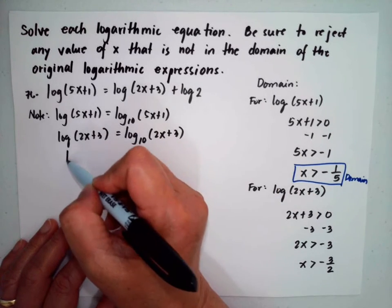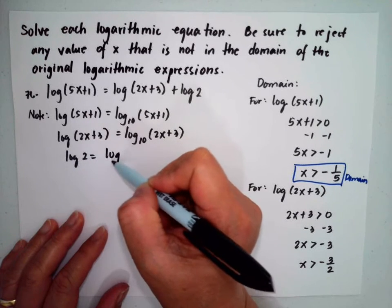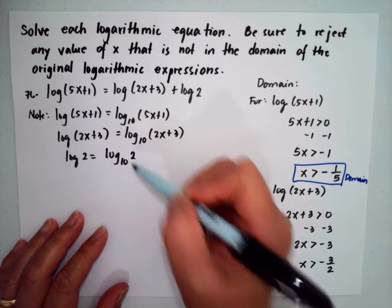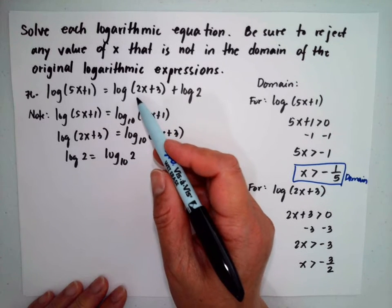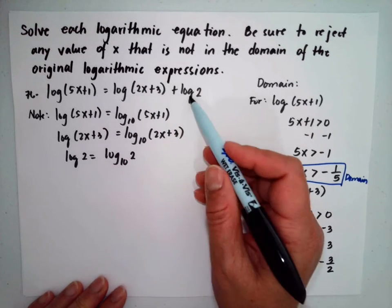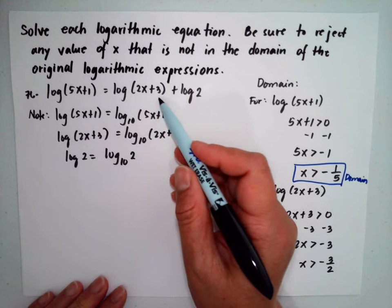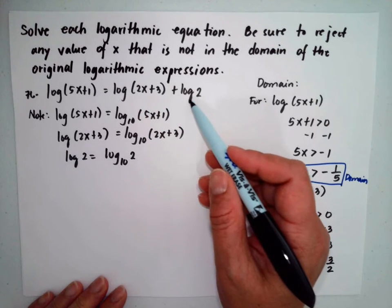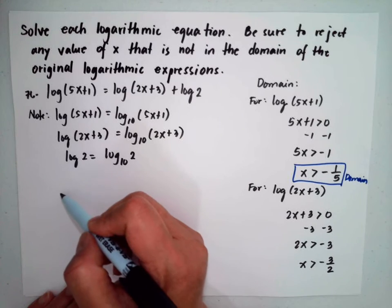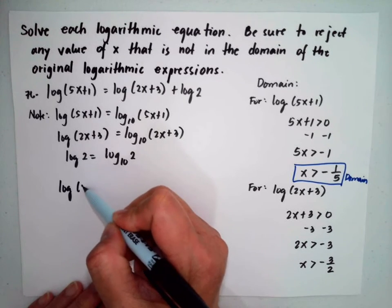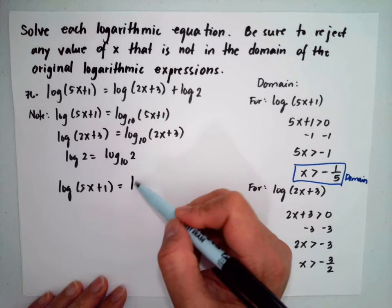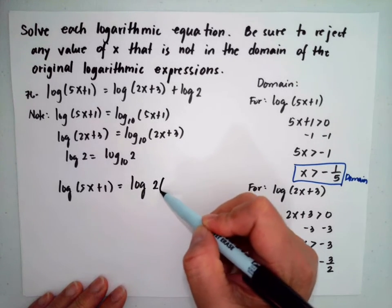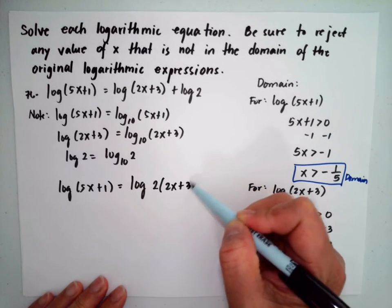And log 2 is actually log base 10 of 2. Then we can apply the properties of logarithm. For log(2x+3) plus log 2, this turns to be log 5x+1. This will be log of 2 multiplied by (2x+3).